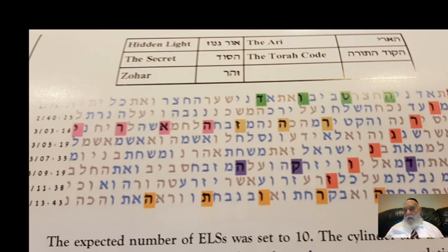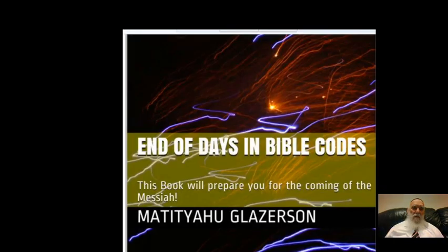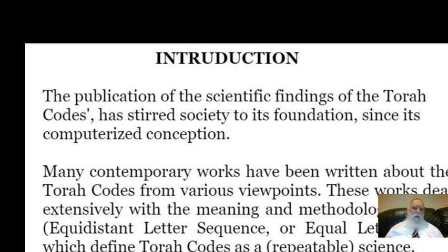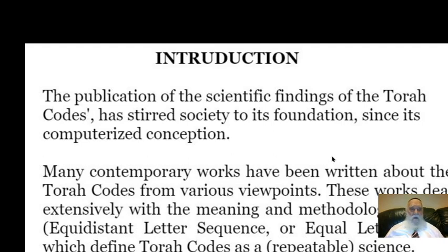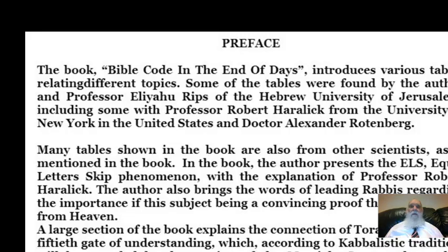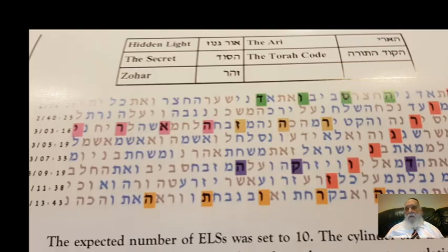This is a table of significance — one in ten thousand. The introduction to the book says the following: the publication of the scientific finding of the Torah codes has stirred society to its foundation. Since its computerized conception, many contemporary works have been written about the Torah codes from various viewpoints. This work deals extensively with the meaning and methodology of the ELS — Equidistant Letter Sequence — or equal letter skip, which defines Torah codes as a repeatable sign. There is a lot more about this in the book.